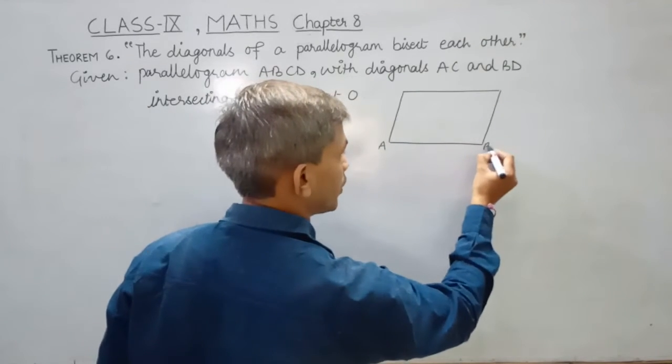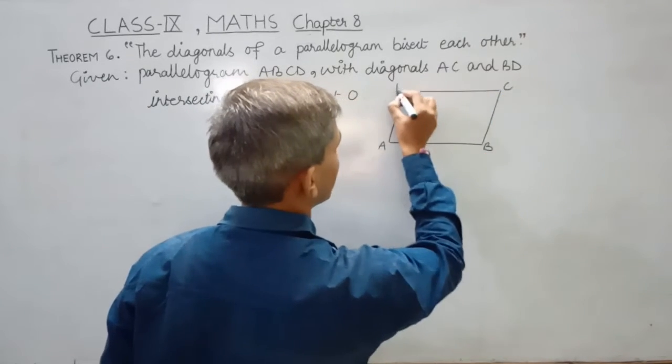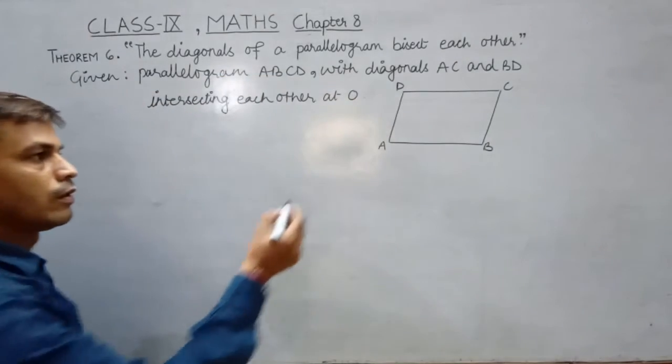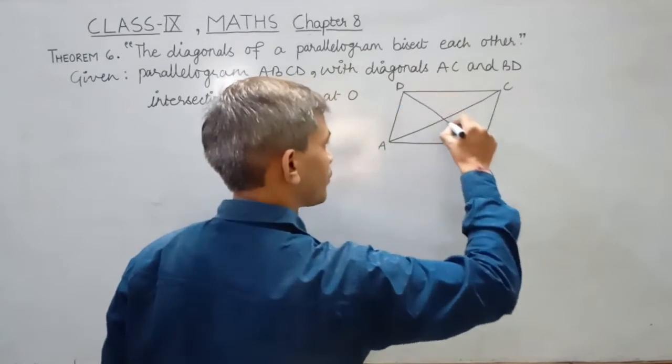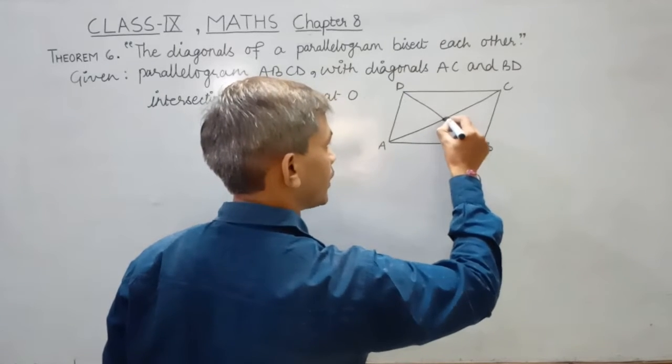We are given a parallelogram ABCD with two of its diagonals AC and BD intersecting at O.